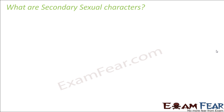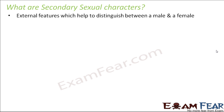So let us see what are secondary sexual characters. These are external features which help to distinguish between a male and a female. Whatever we have discussed — whether it is the male or female reproductive system — it is something internal and not visible from outside. But there are certain traits which are visible from outside and help you distinguish between a male and a female. Such traits are called secondary sexual characters. They are called secondary because they are not primarily involved in reproduction, and sexual because these characters determine the sex of a person.